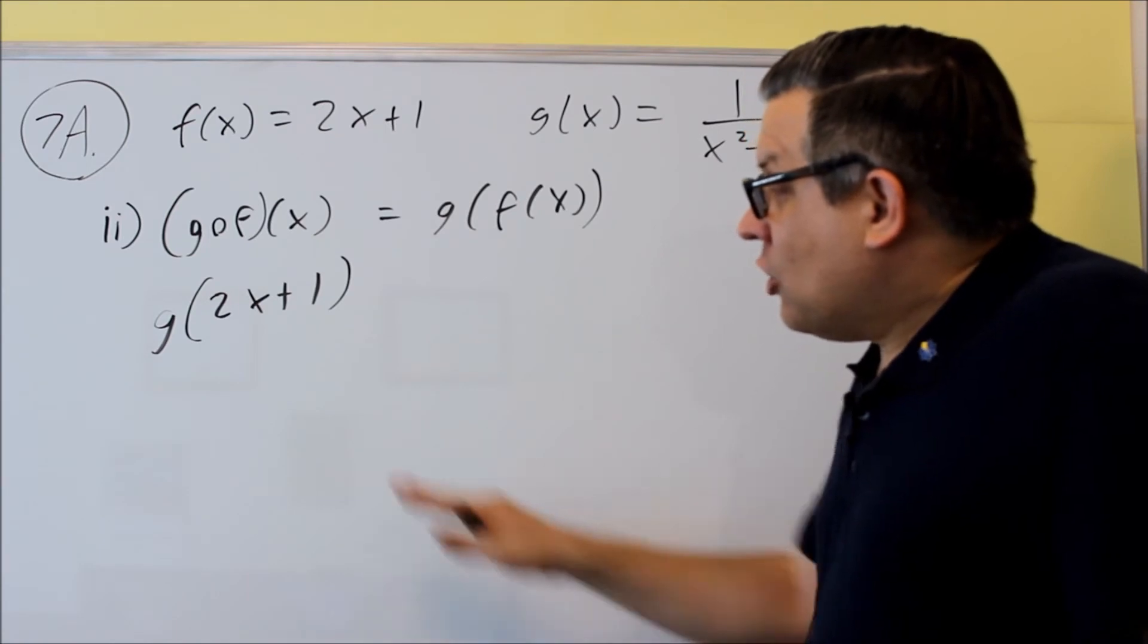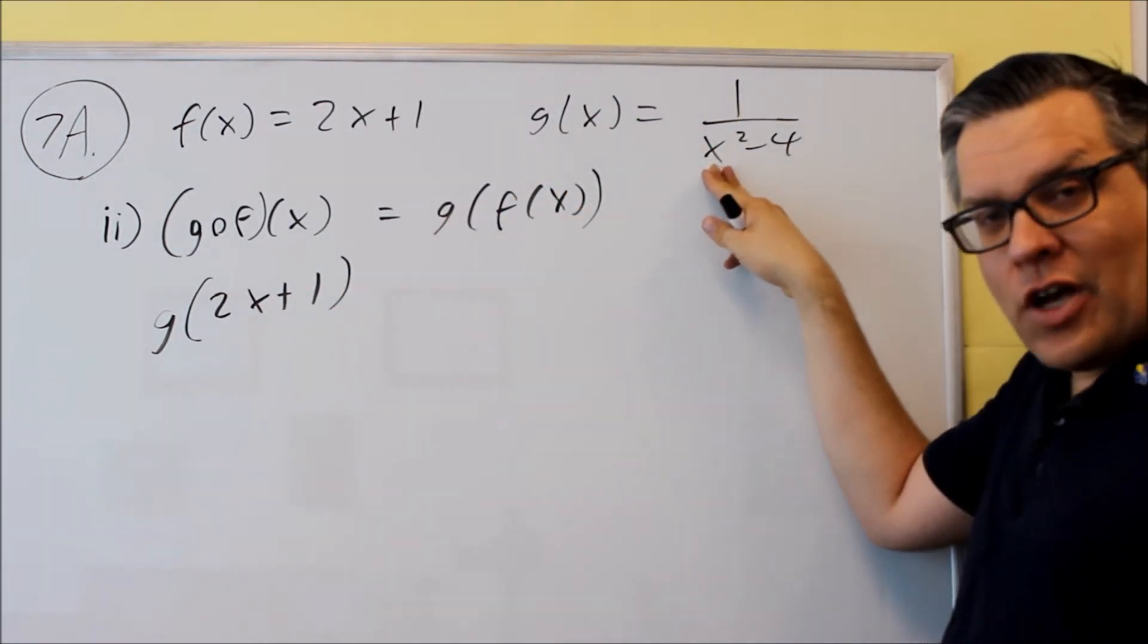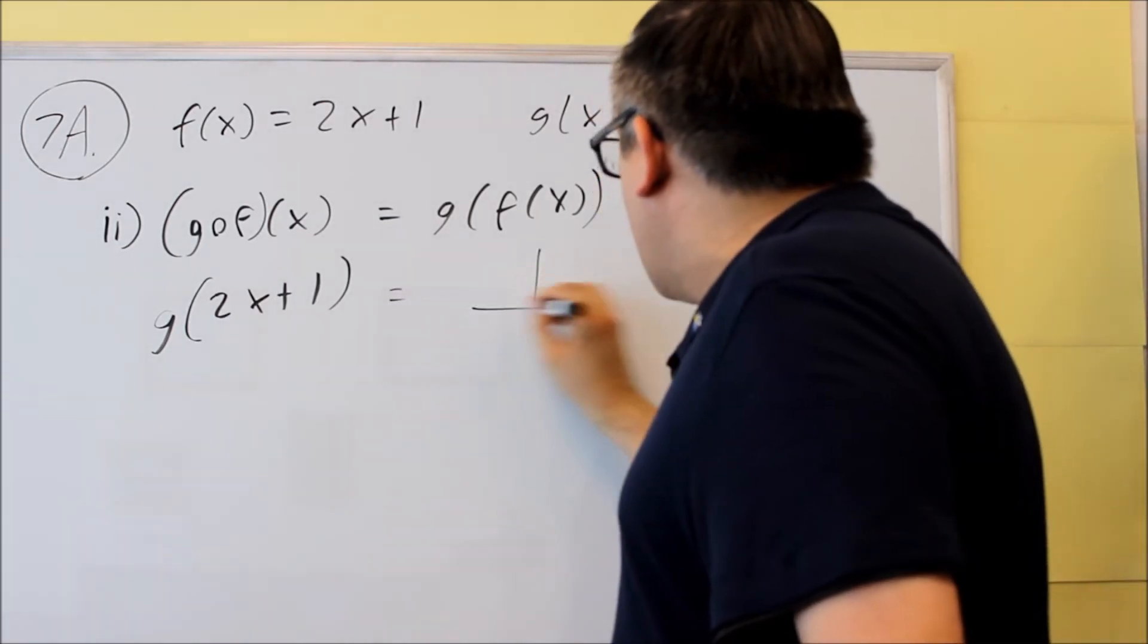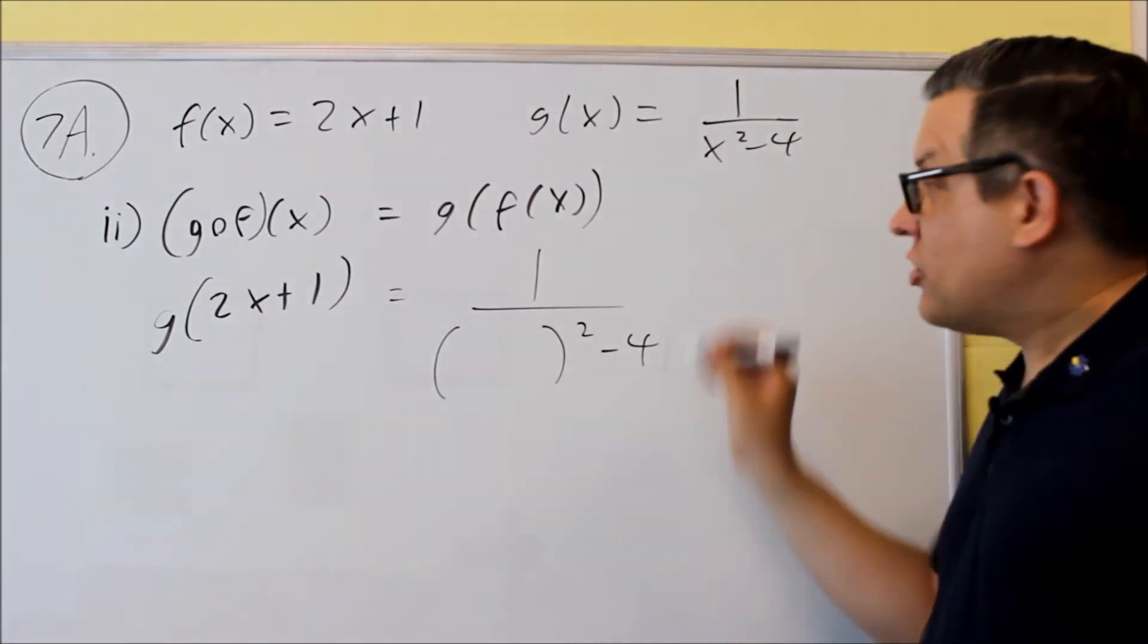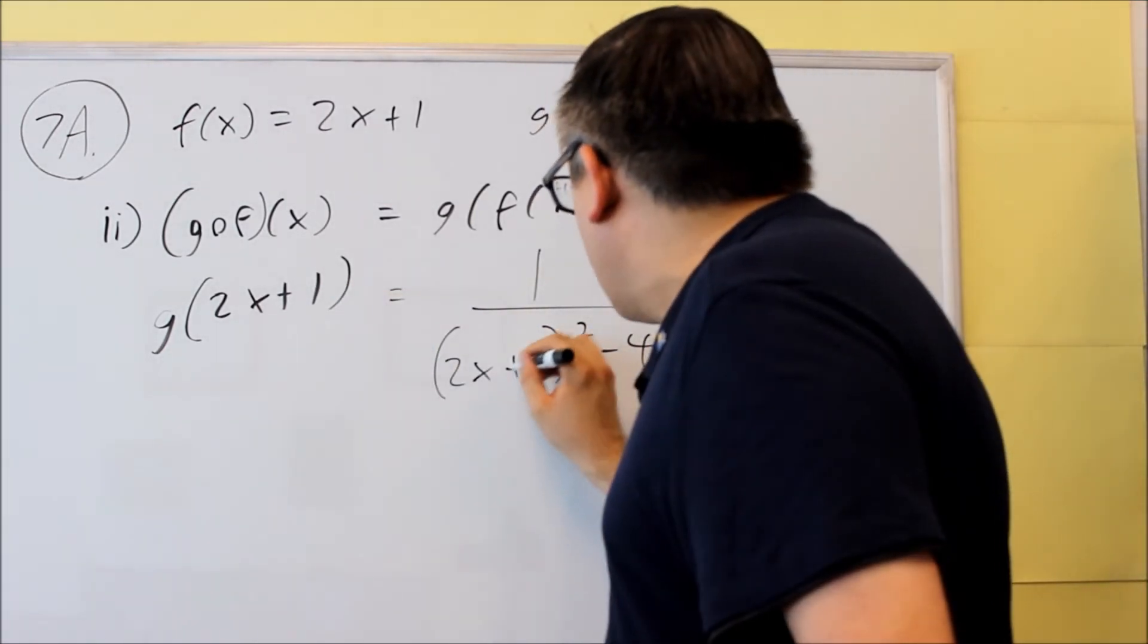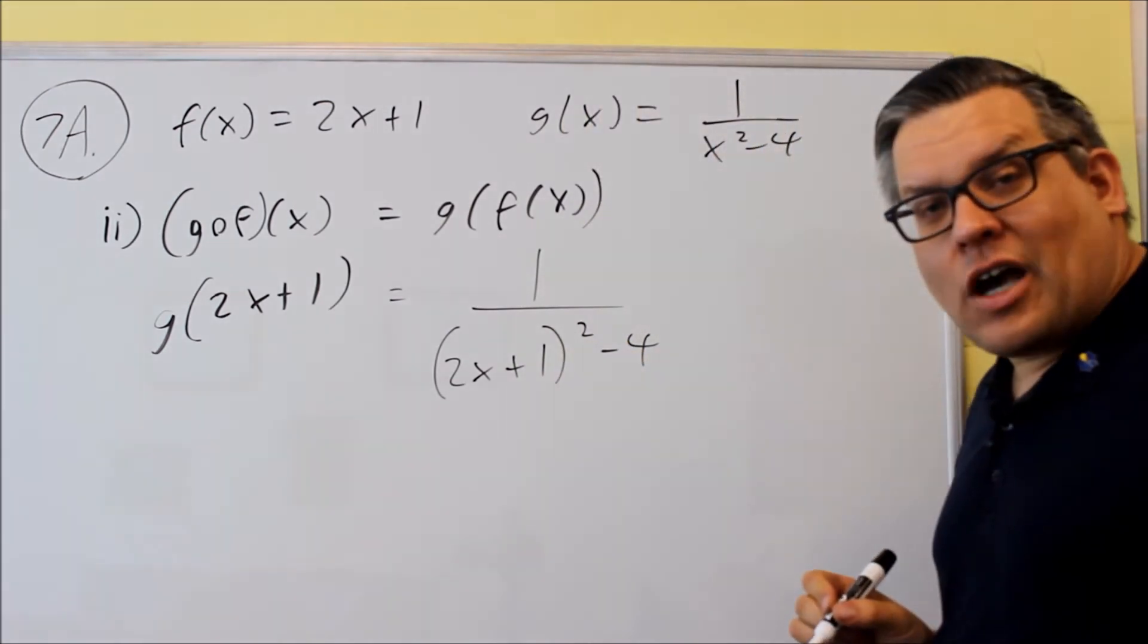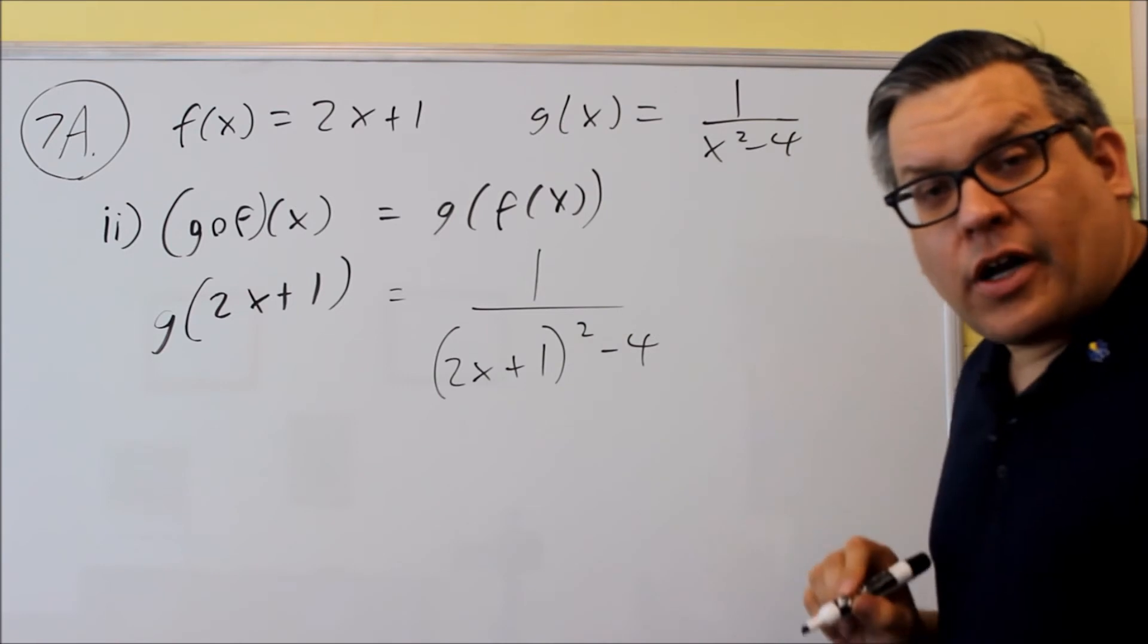So this is saying we're going to take 2x plus 1 and put it into here in place of x. So here's a template that we're going to use. I have 1 over something squared minus 4. So I'm going to take out the x that's here, replace it with 2x plus 1. It goes inside. And now what I want to do is multiply it out and factor it.